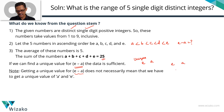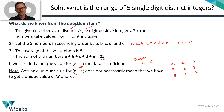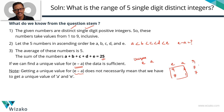For example, e could be 9 and a could be 2, giving a range of 7. Or e could be 8 and a could be 1, still giving a range of 7. Even with two possible values for e and a, if we get a unique value for e minus a, that is sufficient.